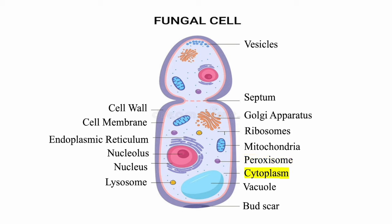Cytoplasm is a gel-like substance enclosed within the cell membrane. In fungi, a septum is a cross wall that divides the hyphae into individual cells. Lastly, the bud scar is a mark left on the surface of the yeast cell where the daughter cell has separated from the mother cell after reproduction.